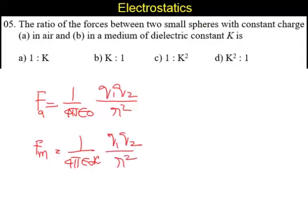We want to calculate the ratio of the forces. So, F A by F M. F A is, let us say it is, because everything is a constant.